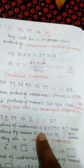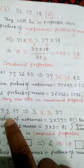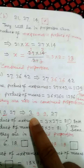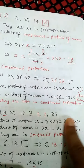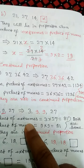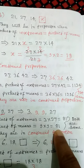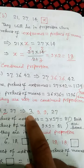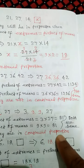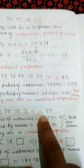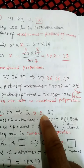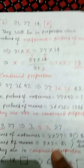Another example: 3, 9, and 27. When we repeat 9, we have 3, 9, 9, 27. Product of means: 9 into 9 equals 81. Product of extremes: 3 into 27 equals 81. Both are same, so these numbers are in proportion. Since the second term is repeated, it is called continued proportion.